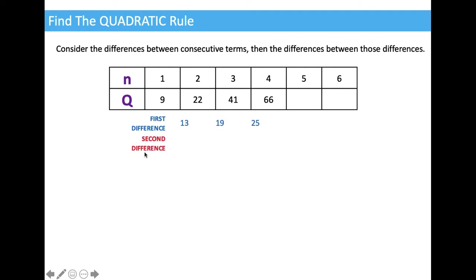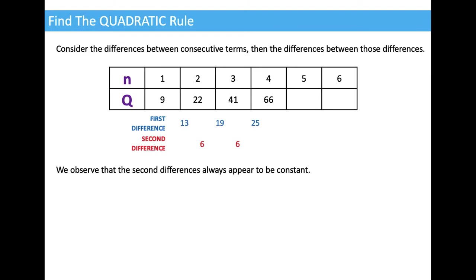Now I'm going to look at the differences between those differences, which I'm calling the second difference. 19 minus 13 is 6, and 25 minus 19 is 6. So the second differences appear to be constant from the information we have. Using that observation, we could continue the pattern, because we would expect the next second difference also to be 6.